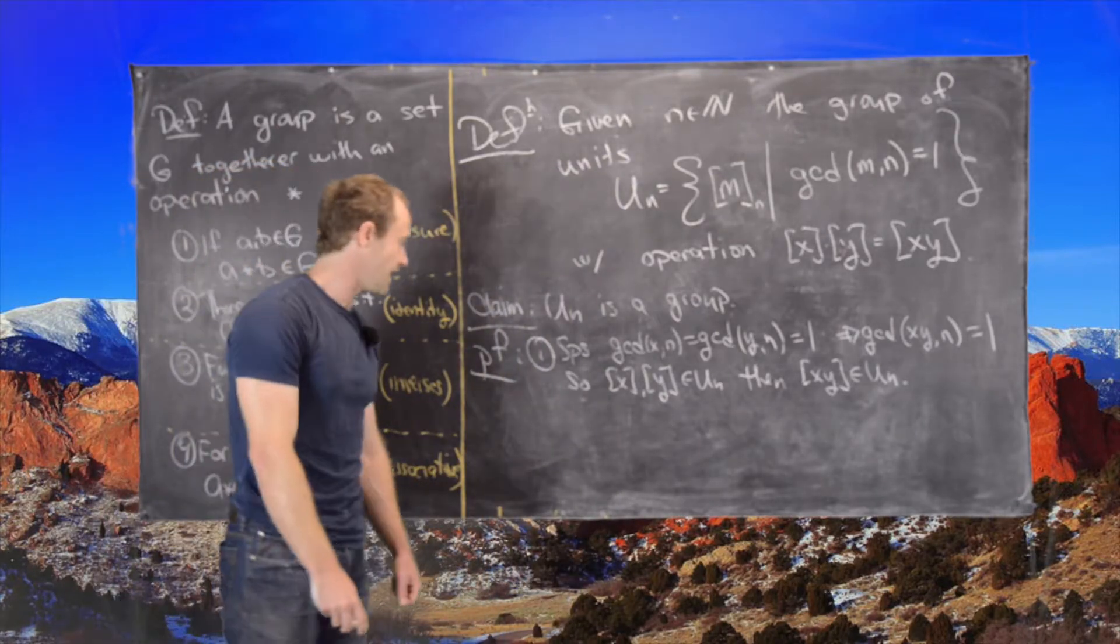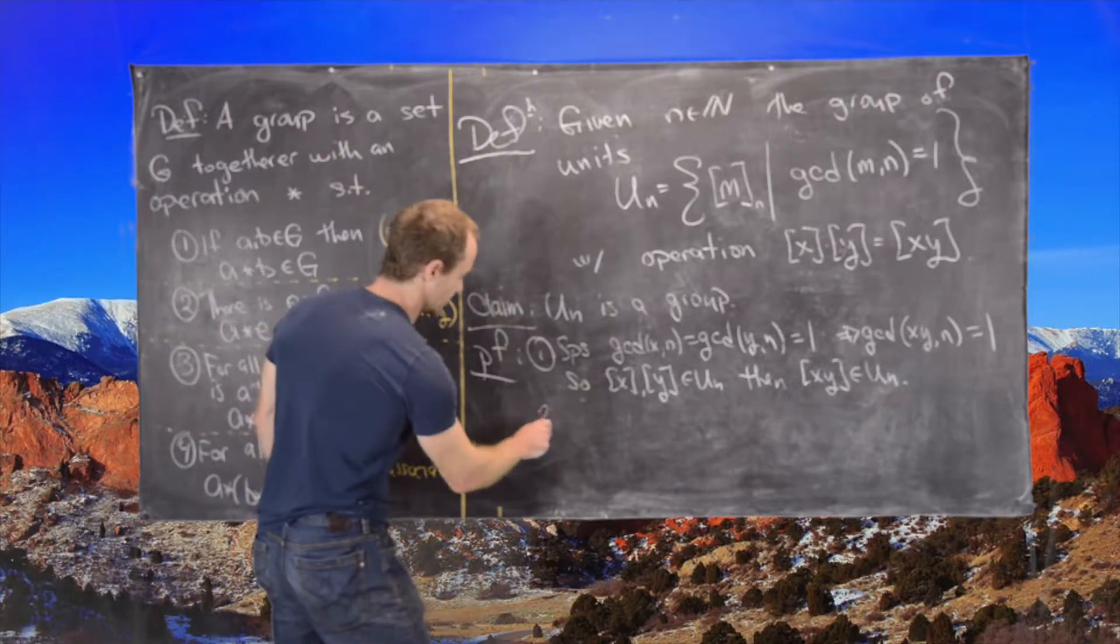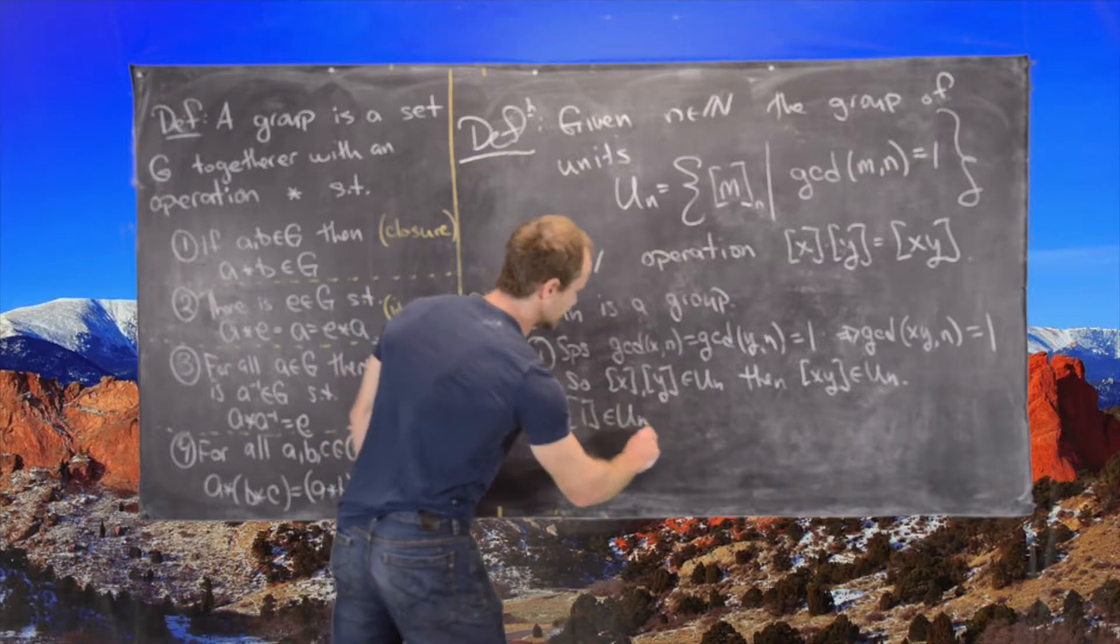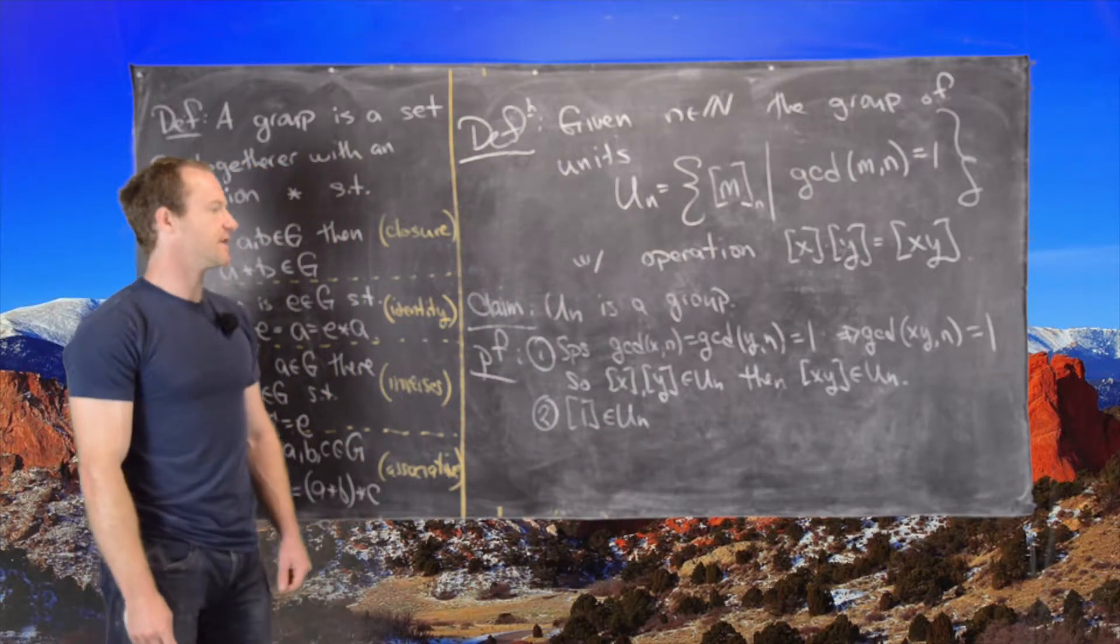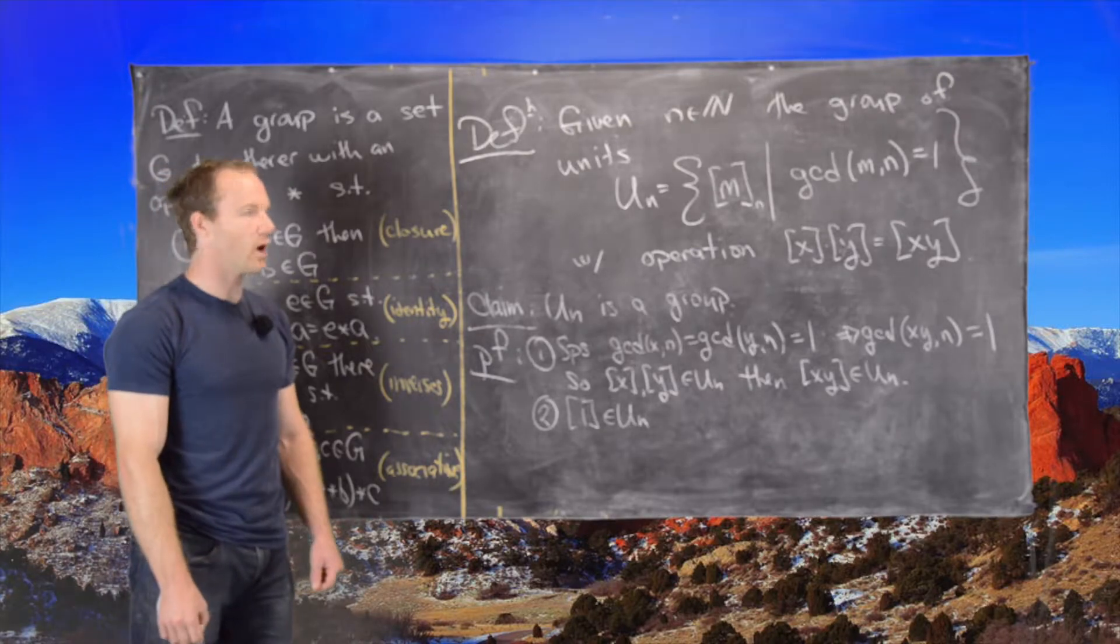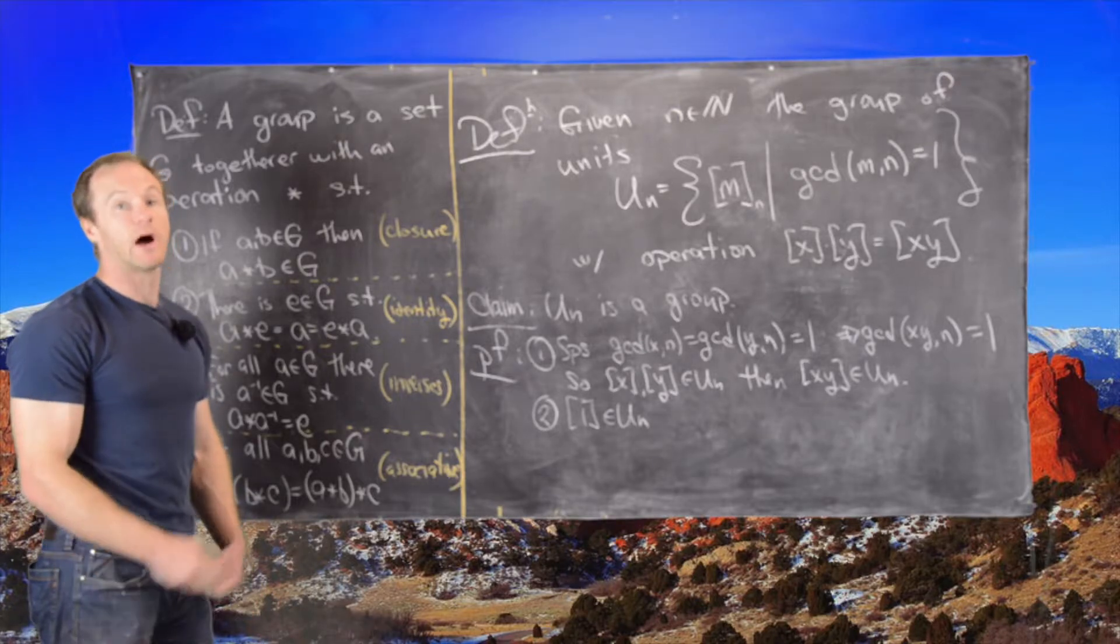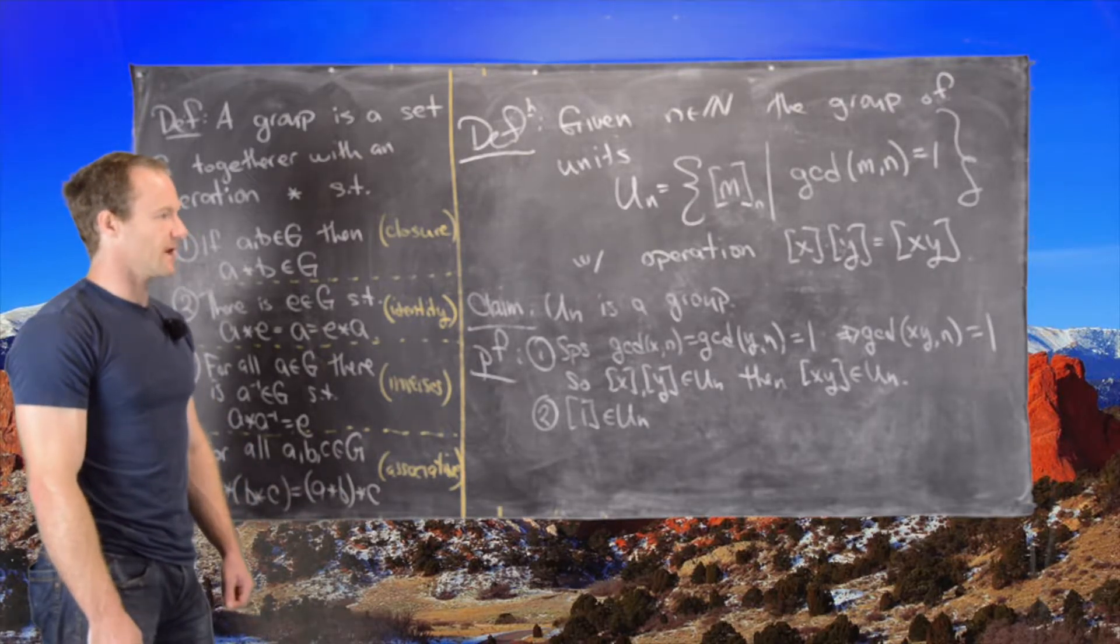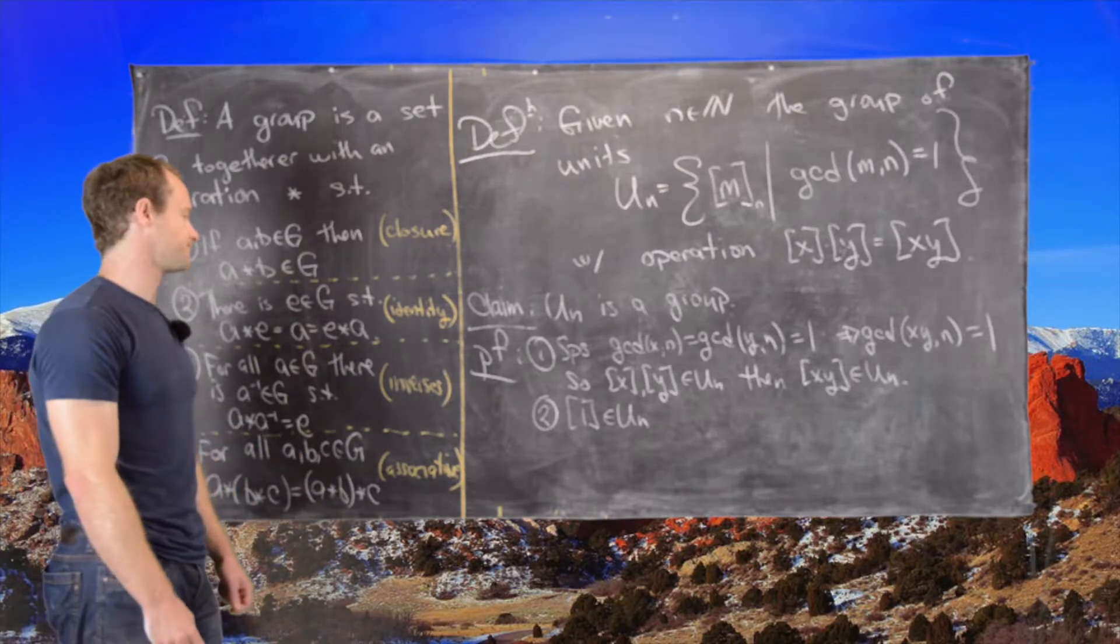Number two: 1 is in Un. That's because gcd(1,n) is obviously 1, since the only divisor of 1 is 1 and negative 1, but we're looking for the greatest common divisor, and greatest common divisors are defined to be natural numbers.